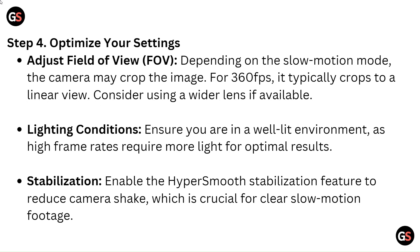Step 4: Optimize your settings. Adjust the field of view — depending on the slow motion mode, the camera may crop the image; for 360 fps it typically crops to a linear view, so consider using a wider lens if available. Ensure you are in a well-lit environment, as high frame rates require more light for optimal results. Enable the HyperSmooth stabilization feature to reduce camera shake, which is crucial for clear slow motion footage.